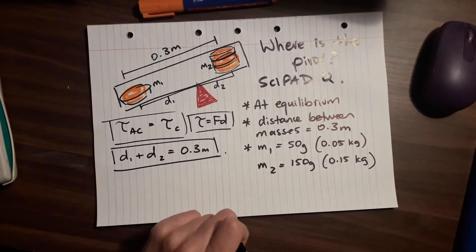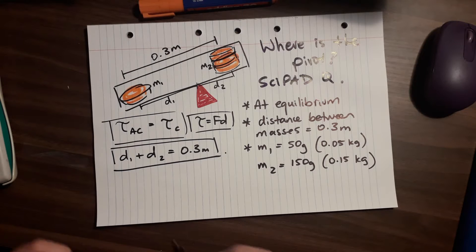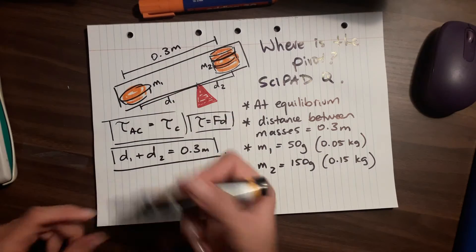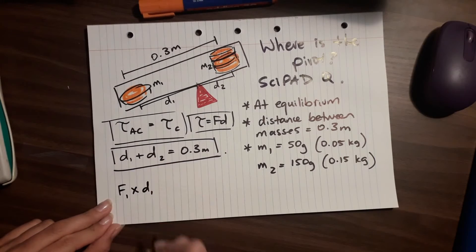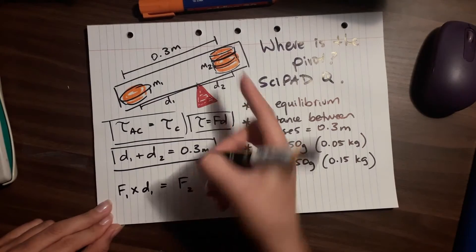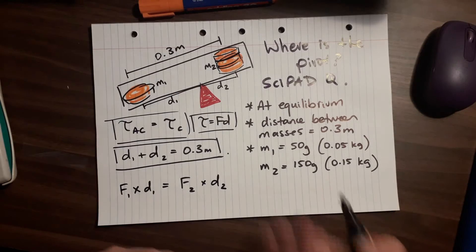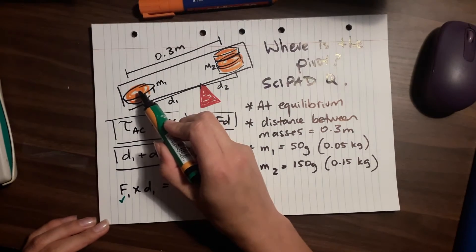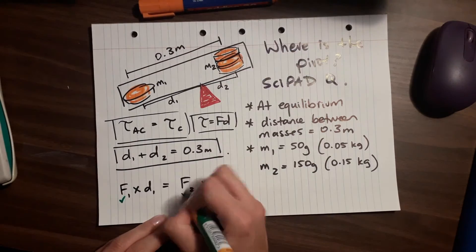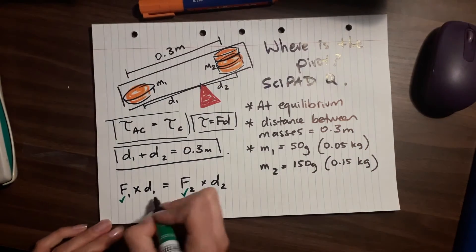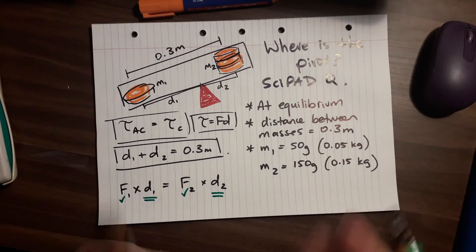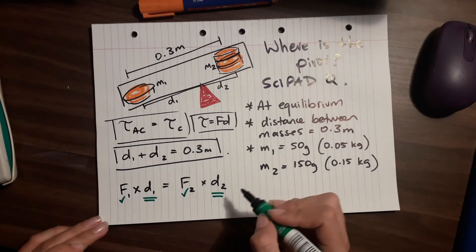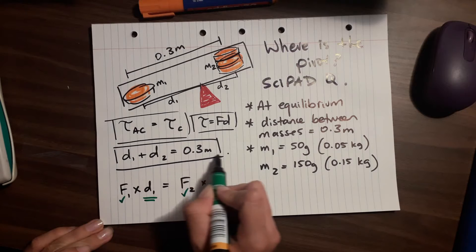So those are things we know. How could we figure this out? The torque from M1 at its distance will equal the torque from M2 at its distance — F1 times d1 should equal F2 times d2. We can calculate both forces since we know the masses, but we don't know d1 or d2. If we knew one of them it would be straightforward, and we can use algebra.